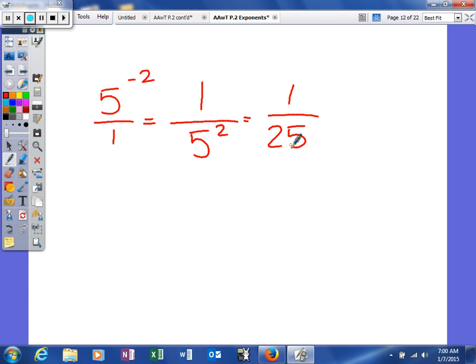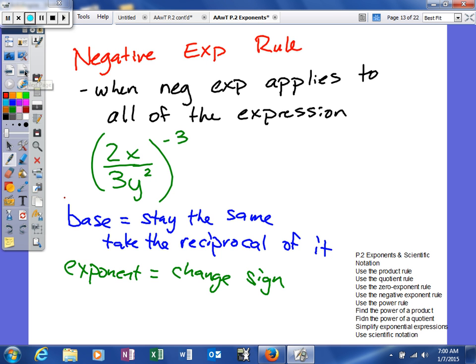Now let's see if we can't look at the other way that we simplify negative exponents. And this rule happens basically when the negative exponent applies to all of the expression. So in the last example, the negative exponent only applied to part. And what we did is we took that base and we moved it from the numerator, denominator, or vice versa, and it changed the sign of the exponent.